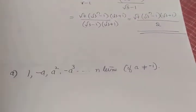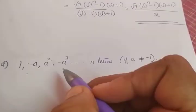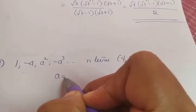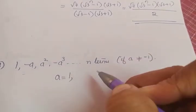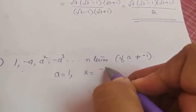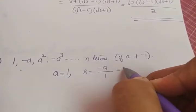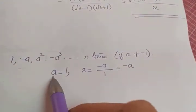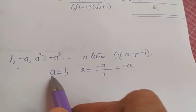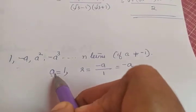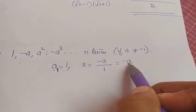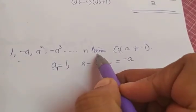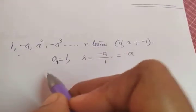Moving to the next one: 1 - a + a² - a³, etc. What is the first term? First term is 1. Common ratio r is second term by first term = -a divided by 1 = -a. Note: don't get confused — this 'a' representing the first term we will mark as a1, and this 'a' is the value given in the question. The question is to find sum to n terms, Sn.